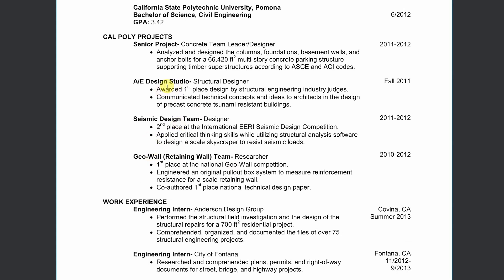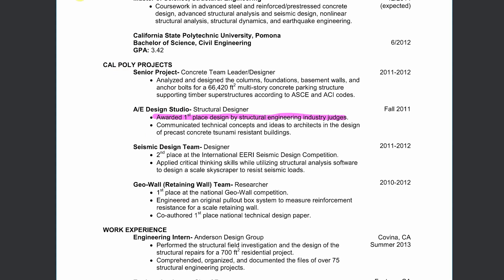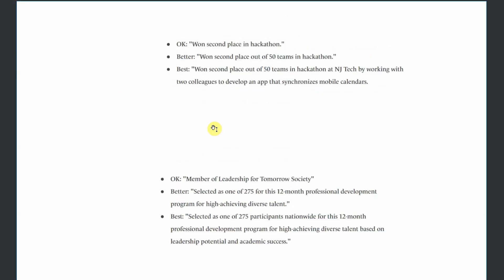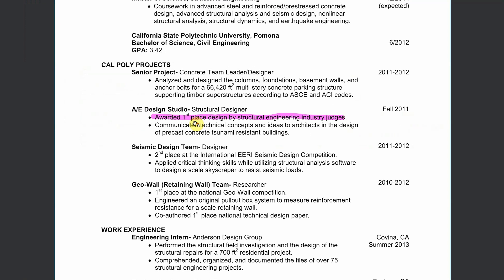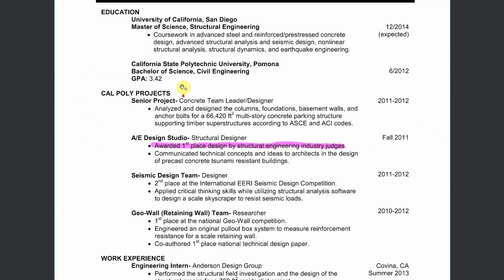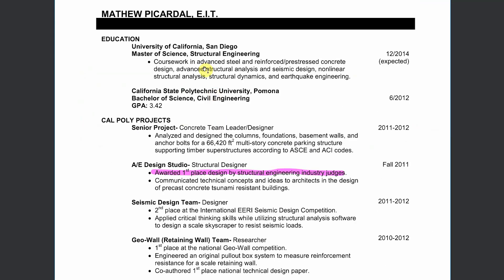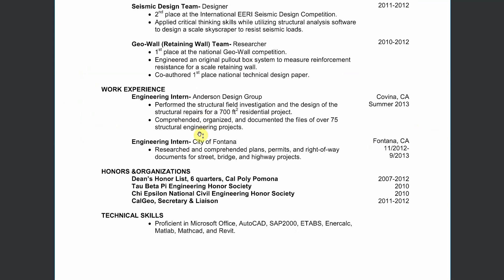For example, 'Awarded first place design by structural engineering judges' is good, but going back to that article, I would improve each bullet to something like 'Won first place out of X teams' with full XYZ context. I would have tried to apply that formula to each and every one of my bullet points — that's probably the thing I can improve most on my first resume. For framework number five, just make sure everything's clean, no filler words or typos.